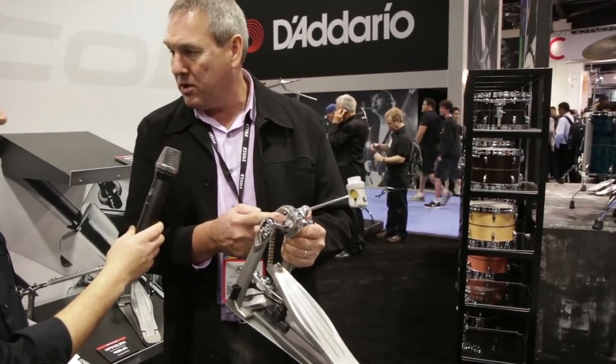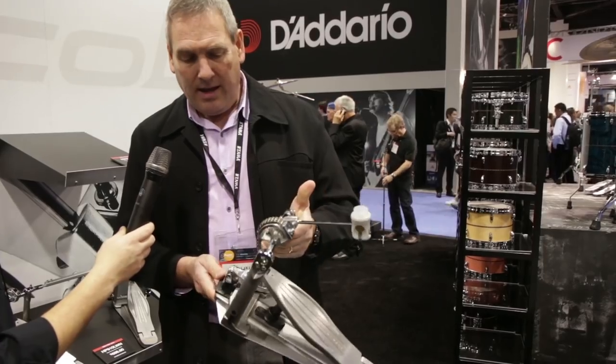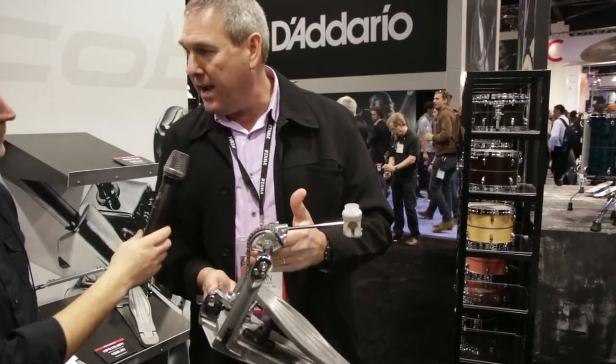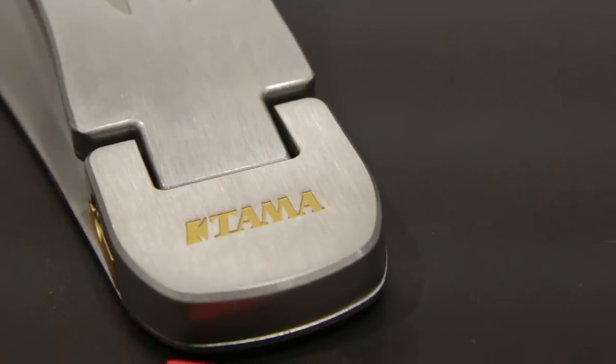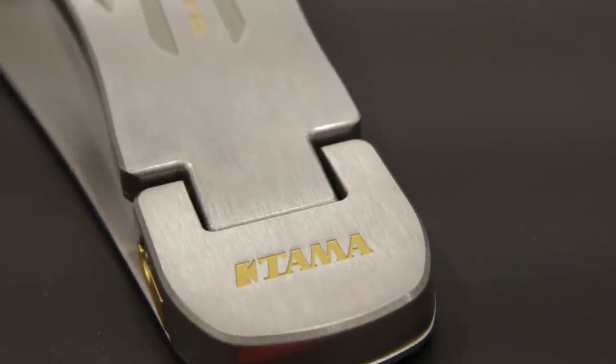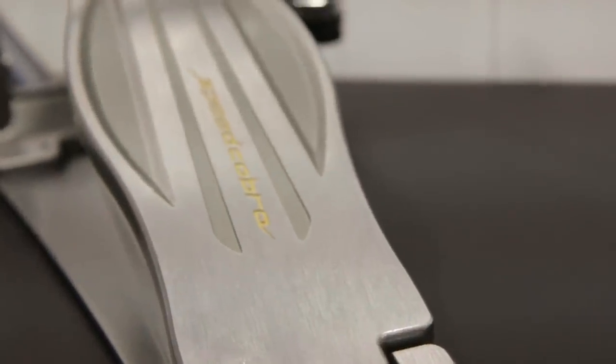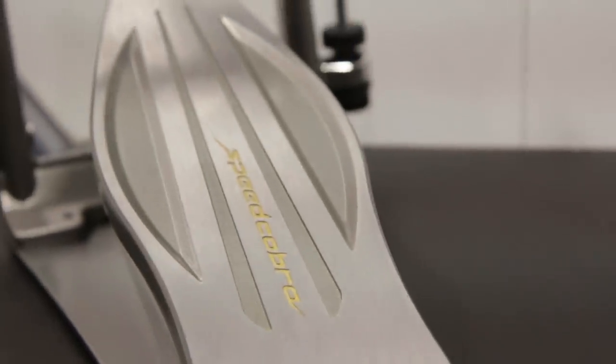Our sprocket is a light sprocket which our Speed Cobra has always had, but now that's on the Iron Cobra as well. So all those upgrades really add up to a smoother, faster, responsive, great feeling pedal. We got a lot of response from artists who checked them out, and this is what we came up with. We think everyone's going to dig it.